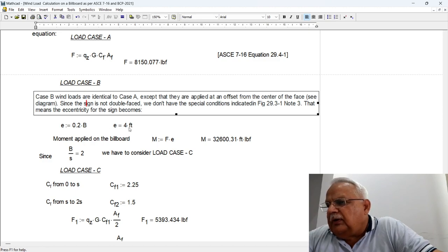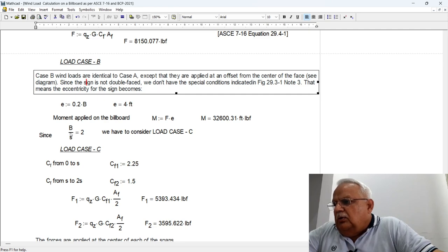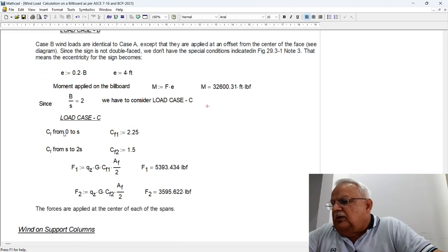As I explained before, load case B is the same thing with an eccentricity of 20 percent of B, so eccentricity comes out to be 4 feet. So the moment on this billboard will be 32,600 foot-pounds. Now we have to check whether load case C is applicable or not. For load case C, the B over S value should be more than 2, that means it is quite a wide billboard. So our value is 2, that means we have to consider load case C.